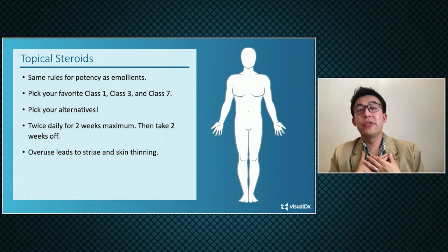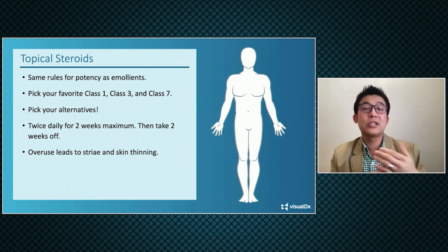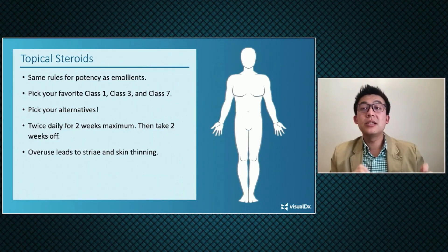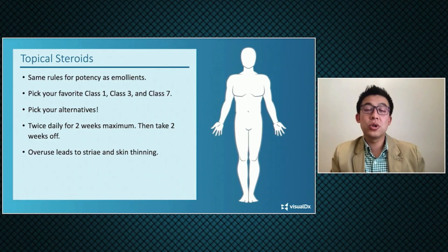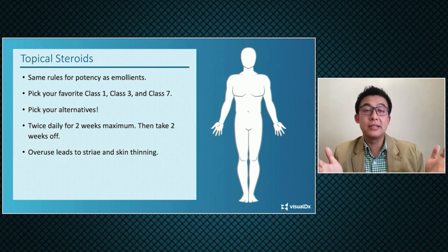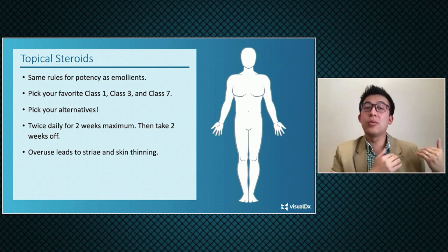My tip for you for topical steroids is to pick your favorite class one, class three, and class seven. So you know, whenever a rash comes in, depending on how bad the rash is, you've got one ready to go. And then to pick your alternative, because so many insurance plans don't cover this or that one for whatever reason. Knowing that when it's rejected by insurance, you've got another one to go to is really helpful.